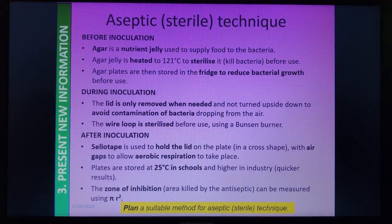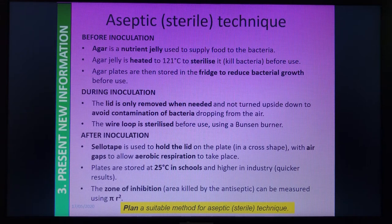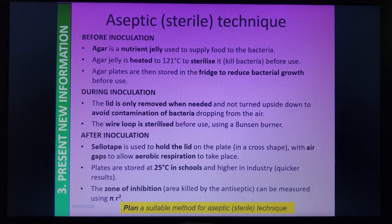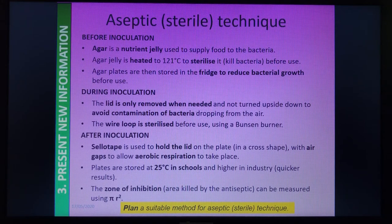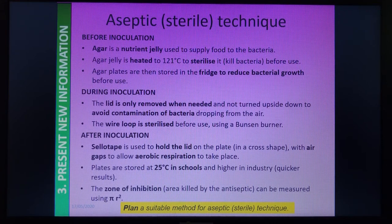We store the plates at 25°C in school — you do need to know that — and higher temperatures in industry to get results quicker. We store them upside down so that condensation forms on the lid rather than on the agar plate. Then we can measure the zone of inhibition — the area killed by the antiseptic — using the formula pi r squared to work out the area of a circle.